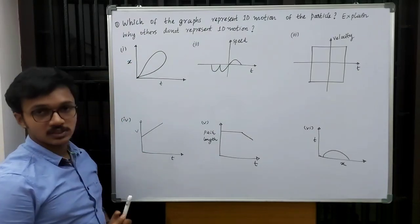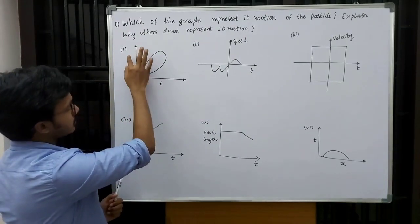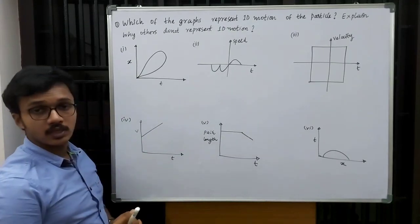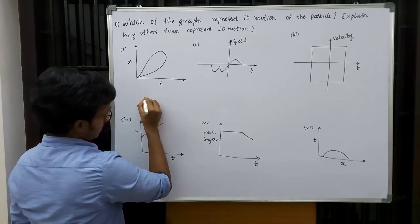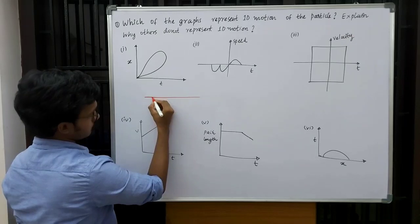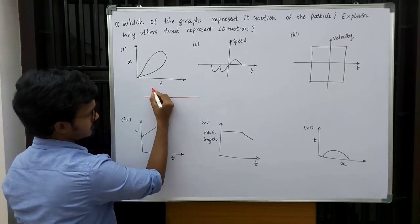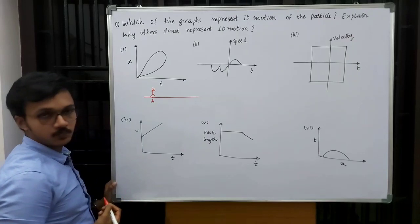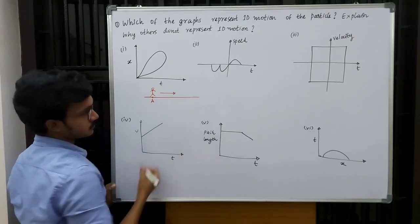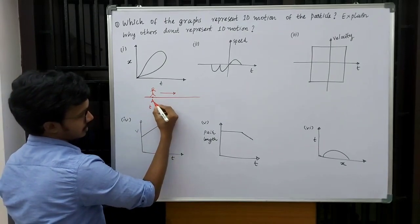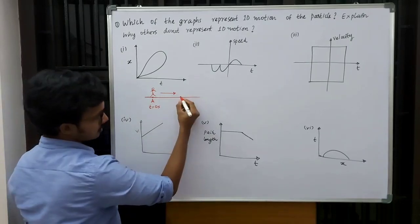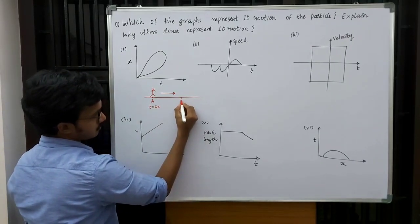Initially let us consider the first graph. We are given with an x-t graph, that is a position-time graph. Before going to that question, let me consider an example. I am considering a horizontal surface, and let me assume this is point A. I am standing at this point A. Now what is happening is I am moving towards right, and initially when I started my journey towards right, the time was t equals 0 second.